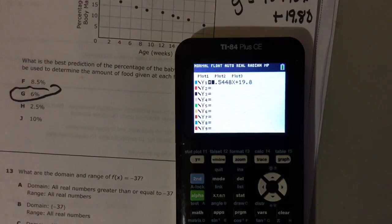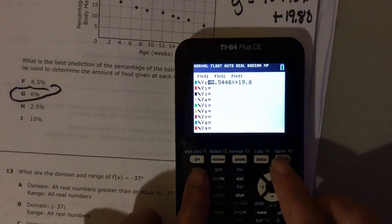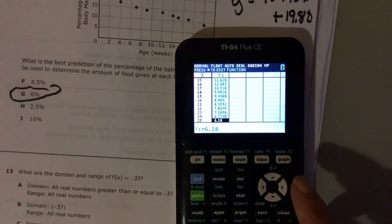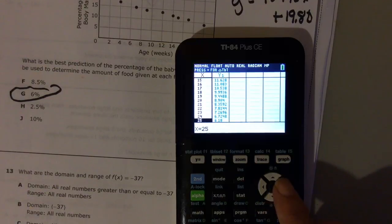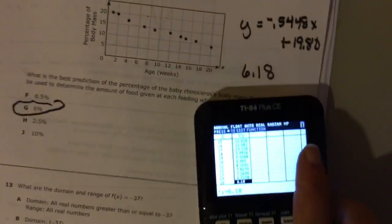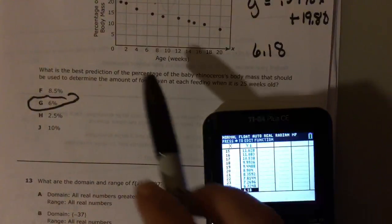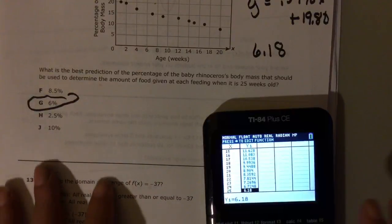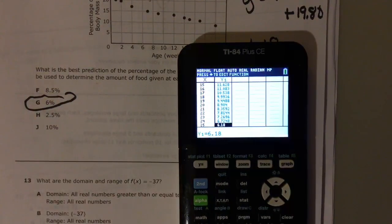And then once you do that you're going to do second graph and look at the table where your X is 25. Where your X is 25 it's 6.18. So it says, okay what is the best prediction? So that's approximately 6%, so your answer is G.